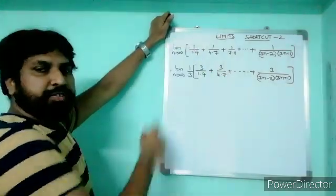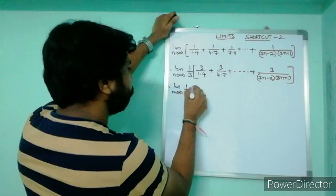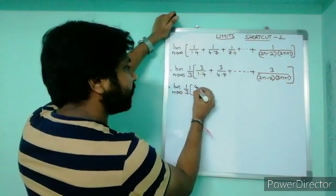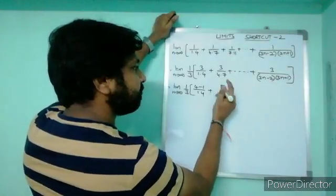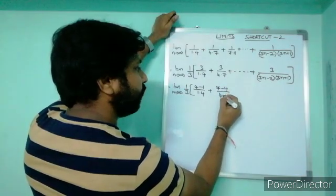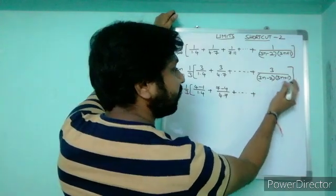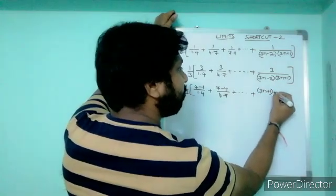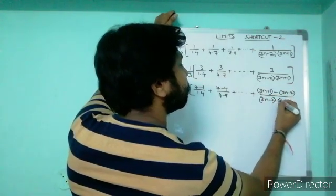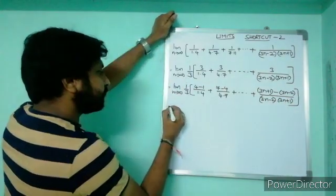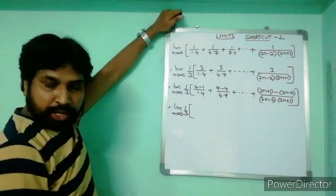If you take 3 common and cancel you will get the previous step. Then this is limit n tends to infinity of 1/3 times all. The numerator 3 can be written as (4−1) for the first term, (7−4) for the second term, and so on. The last term numerator is (3n+1) − (3n−2), which equals 3.